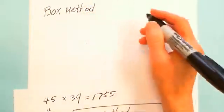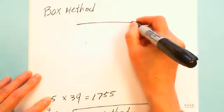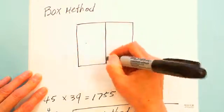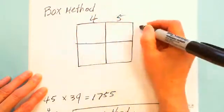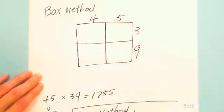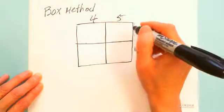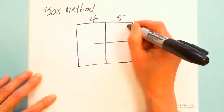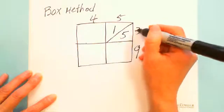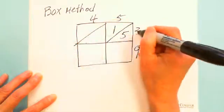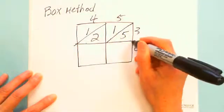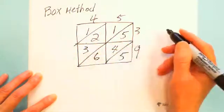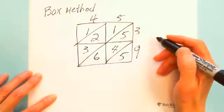Box method - they draw a box. Write the number 45: 4, 5, and 3, 9 beside it. 45 × 39. Then you multiply these. 3 × 5 is 15 and write 1 here, 5 here. 3 × 4 is 12, and 5 × 9 is 45, and 4 × 9 is 36.